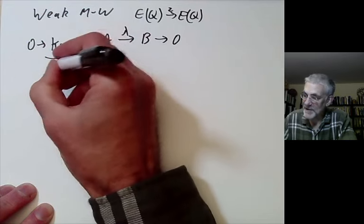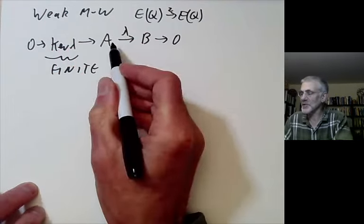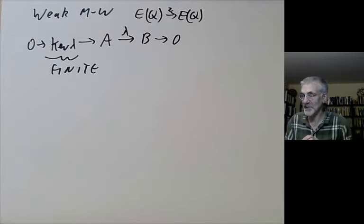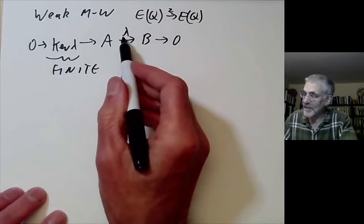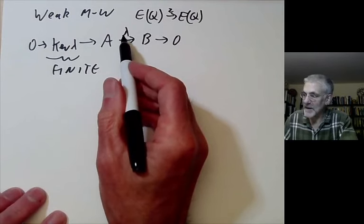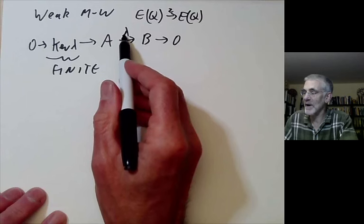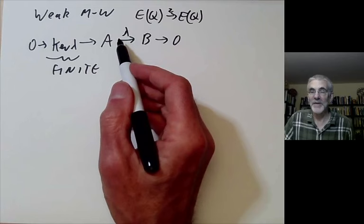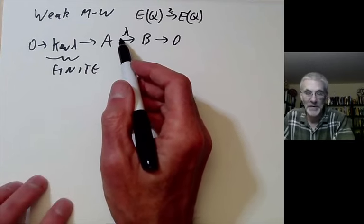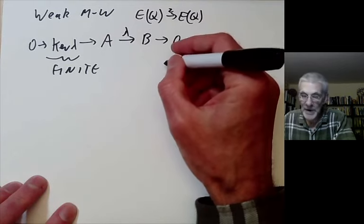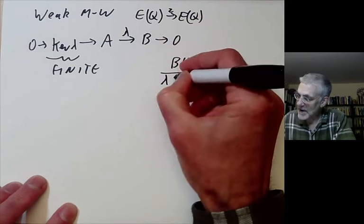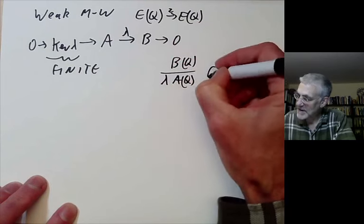We want this to be finite. So isogeny roughly means that the kernel is finite and the map is surjective. For example, if we multiply by any positive integer, that would be an isogeny. There are also some other isogenies related to complex multiplication. What we want to show is that B(Q) over lambda A(Q) is finite.